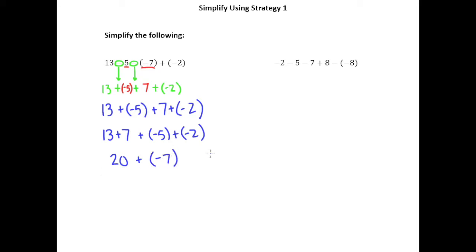And then we'll finish out the problem by subtracting 20 and 7 and understanding that the answer is positive because the larger absolute value is a positive number.